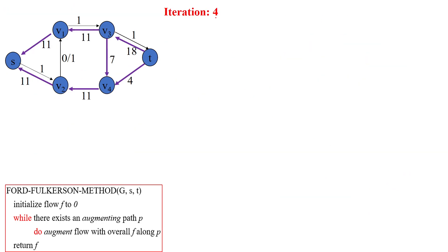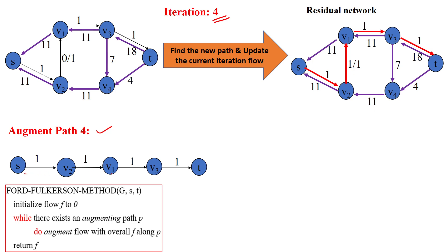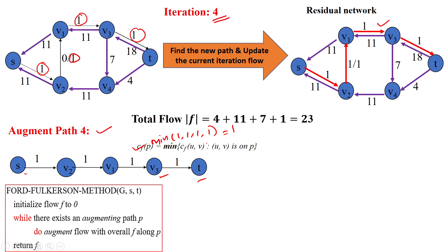For iteration 4, the new augmenting path is S to V2, V2 to V1, V1 to V3, V3 to T. All these edges have a capacity value of 1. The minimum of 1, 1, 1, 1 equals 1. The existing flow is 22, and we add the new path value of 1. So F equals 22 plus 1 equals 23.